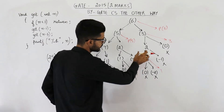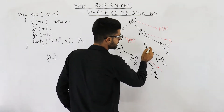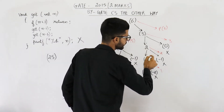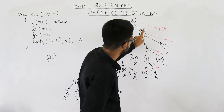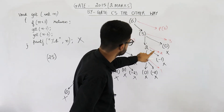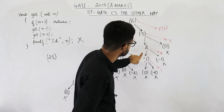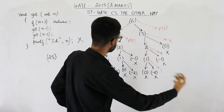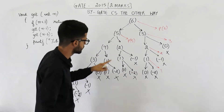So get(2) will print 2. We have now completed the right side of the tree.